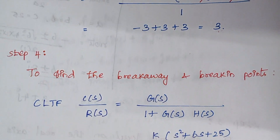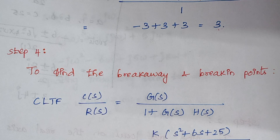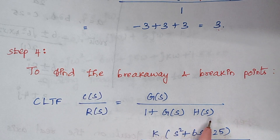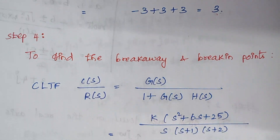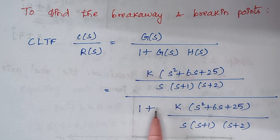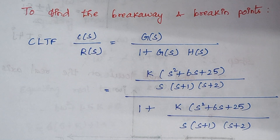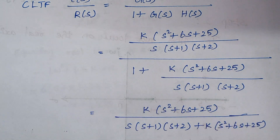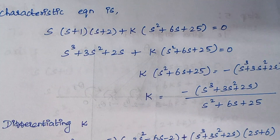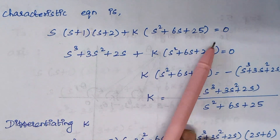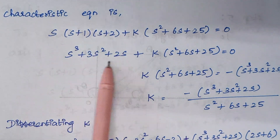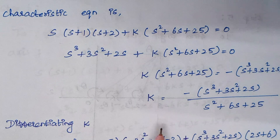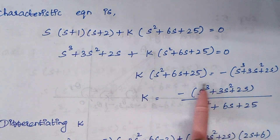Step 4 is to find the breakaway and break-in points. First we calculate the closed loop transfer function, given by G(s) divided by 1 plus G(s)H(s), where G(s) is given in the problem. Taking LCM and solving, we arrive at an expression for the closed loop transfer function. The denominator of the closed loop transfer function is the characteristic equation. Multiplying the three terms and framing the expression in terms of k, we get the expression for k.